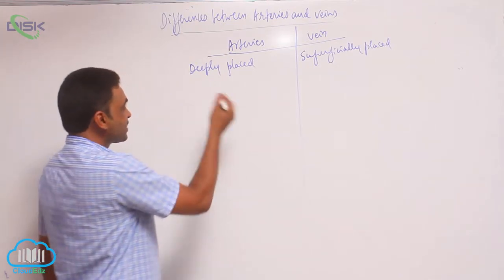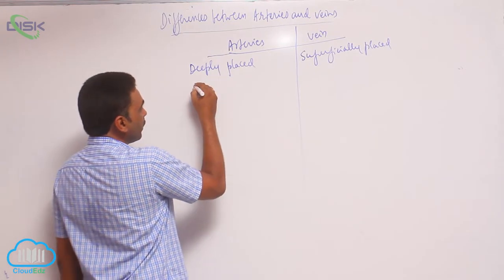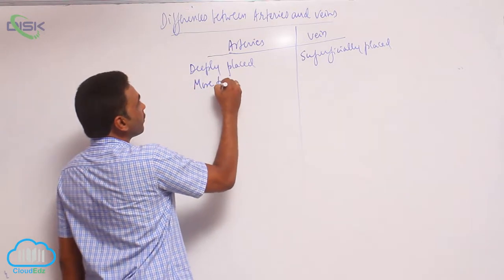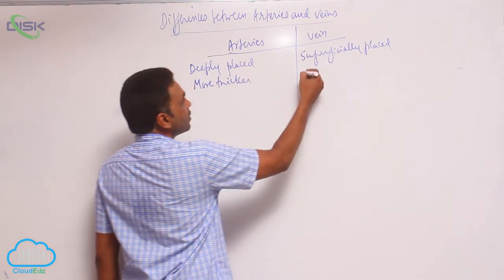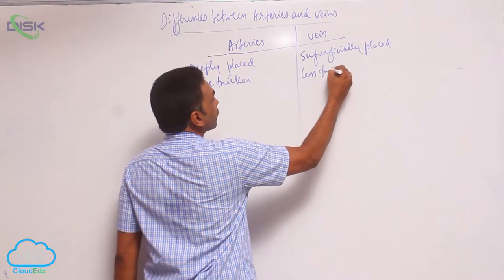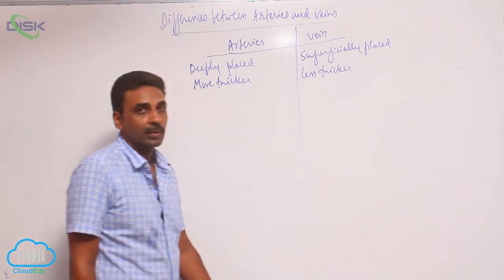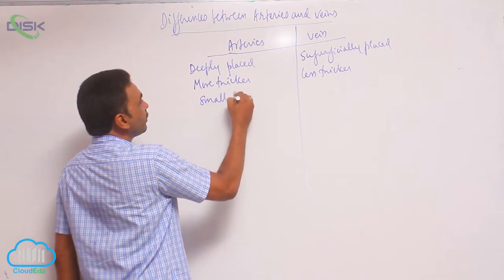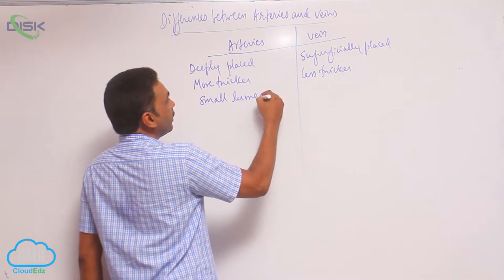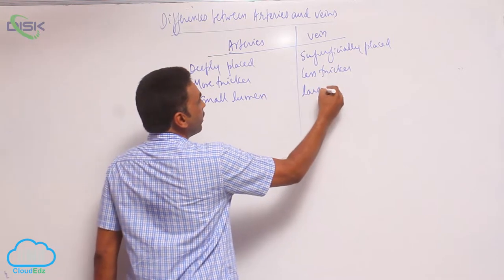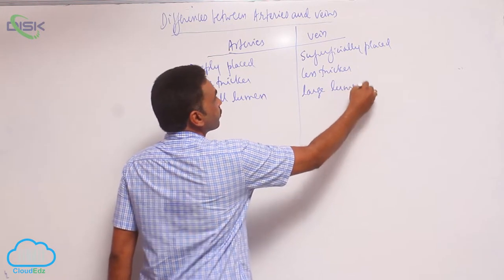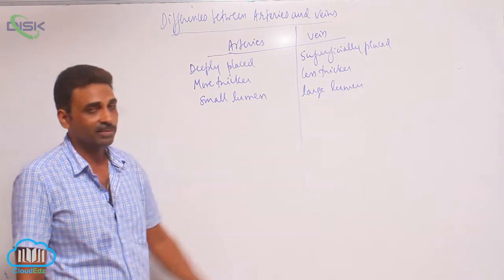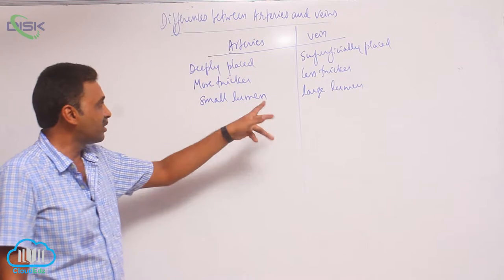We just saw the structure of arteries and veins. Arteries are more thick, whereas veins are less thick. Regarding lumen, arteries have a small lumen, while veins have a large lumen. The cavity inside veins is large, but the cavity inside arteries is smaller.